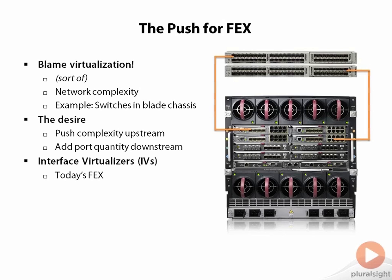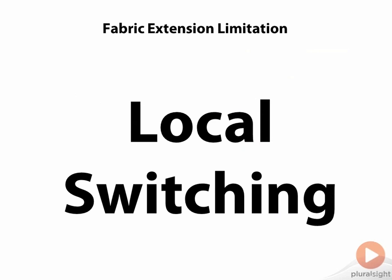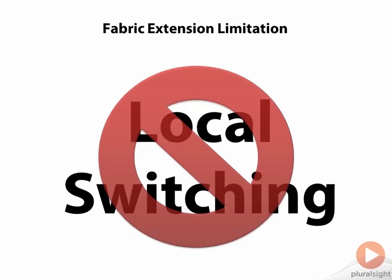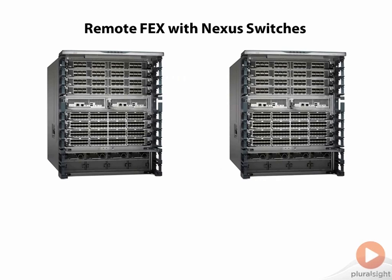The idea is to use a kind of intermediary switch that is lobotomized — it doesn't do local switching, but it provides the port density we're looking for. It checks the box for downstream port quantity and pushes complexity upstream, because we're not really managing these FEXes; they're like remote line cards. The critical point people miss: a fabric extender does not do local switching — ever. It's like a zombie switch that relies entirely on its parent switch. Traffic entering a FEX goes upstream to the parent, which decides where it goes, and may send it back down the same link to another server on the same FEX.